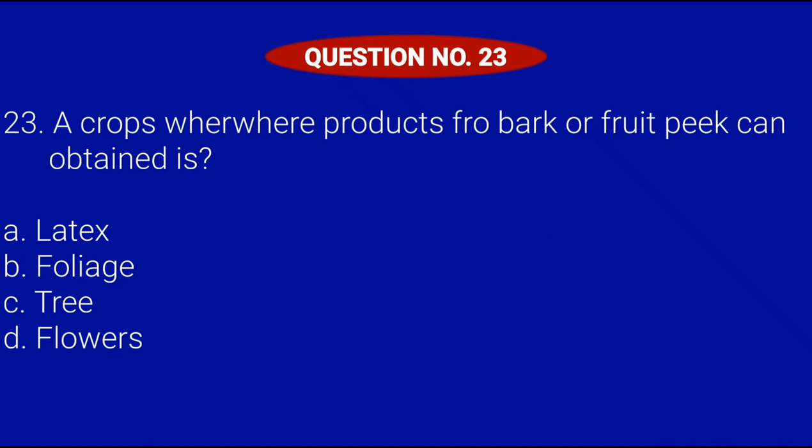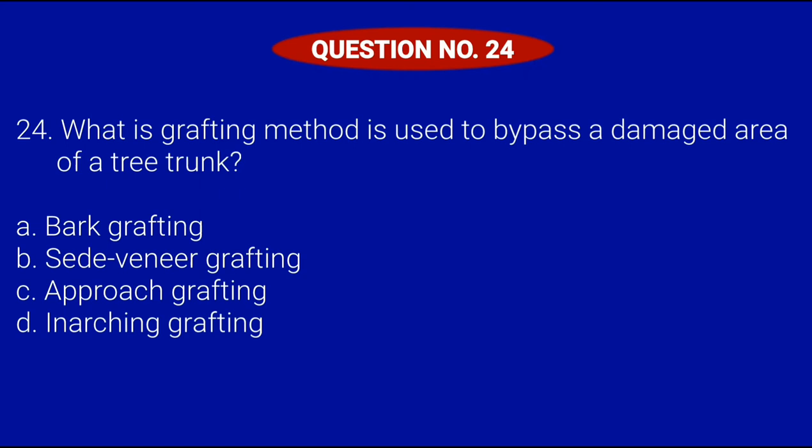Question number 23. A crop where products from bark or fruit peat can be obtained is: Letter A, Latex; Letter B, Foliage; Letter C, Tree; or Letter D, Flowers. Correct answer is Letter A, Latex.